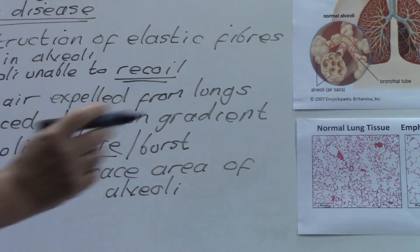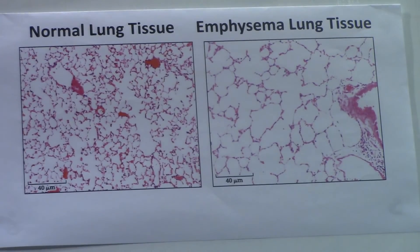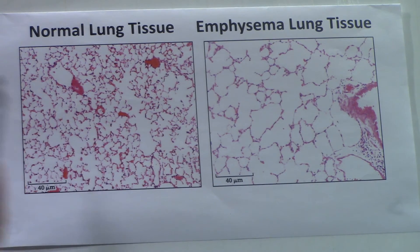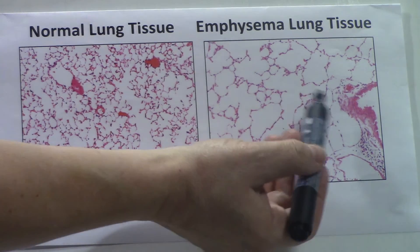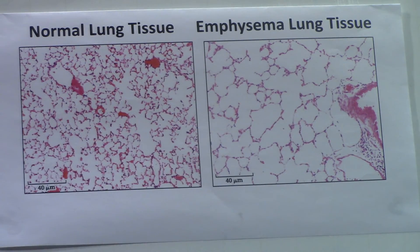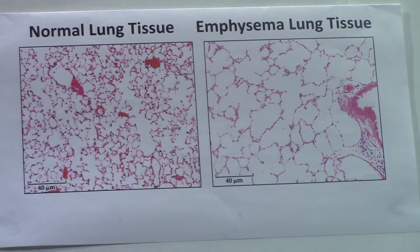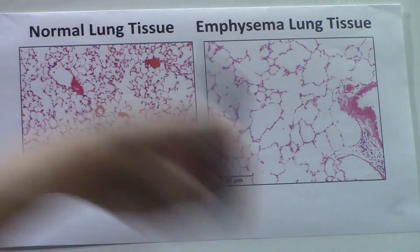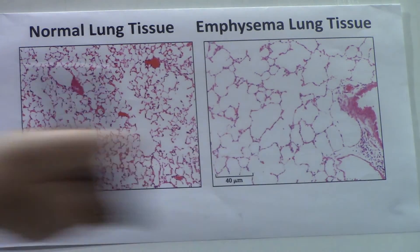Looking at two thin sections seen with a light microscope of alveoli tissue — one from a healthy, normal individual and, at the same magnification, one from a person with fairly advanced emphysema. You can see all the tiny alveoli and the different membranes available for gas exchange in the healthy sample, versus much larger air spaces and far less membrane in the emphysema sample. The reduction in surface area is quite noticeable.